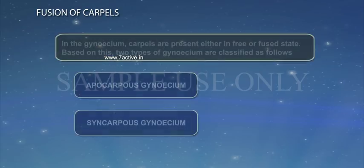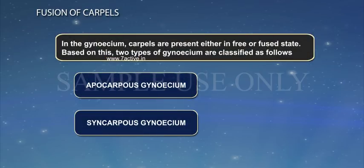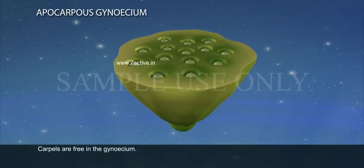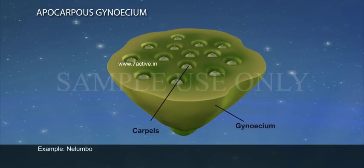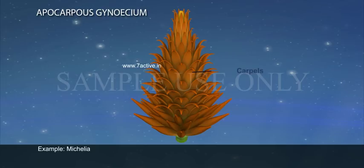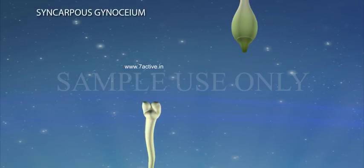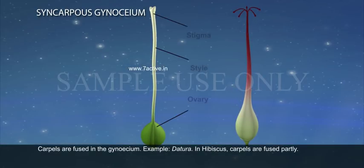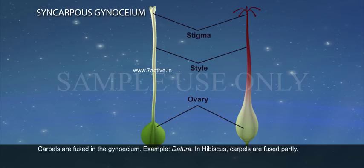Fusion of carpels: In the gynoecium, carpels are present either in free or fused state. Based on this, two types of gynoecium are classified. Apocarpous gynoecium: carpels are free in the gynoecium, example Nelumbo, Michelia. Syncarpous gynoecium: carpels are fused in the gynoecium, example Datura. In Hibiscus, carpels are fused partly.